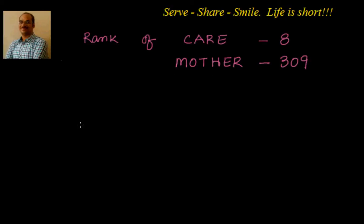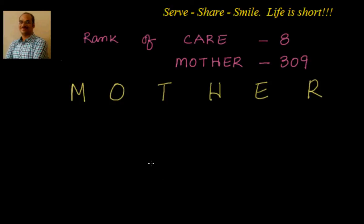Let us do one more example with the word 'MOTHER': M, O, T, H, E, R. We rank each letter alphabetically. Going through the alphabet: E is 1, H is 2, M is 3, O is 4, R is 5, T is 6. So all the alphabets in MOTHER are ranked according to alphabetical order as: M=3, O=4, T=6, H=2, E=1, R=5.